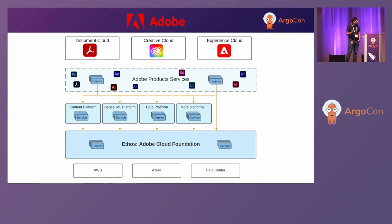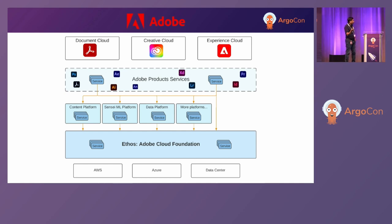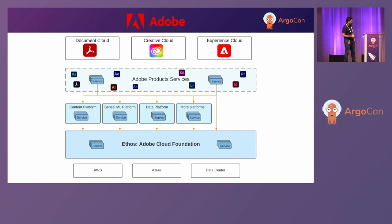Before we go deep into the technology, let me just go high level. Adobe has thousands of services. There are three clouds — Document Cloud, Creative Cloud, and the Experience Cloud — which are powered by lots of products and services, which in turn depend on lots of platforms: machine learning platform, content platform, data platform. All these services are built on top of Ethos, which you see at the bottom, which is built on top of AWS, Azure, and we also have a data center.